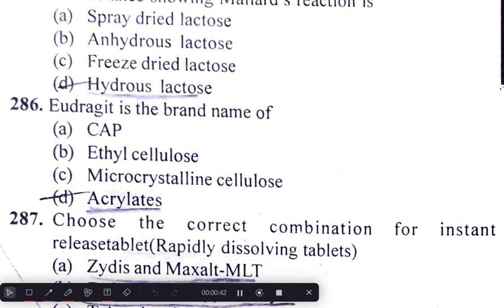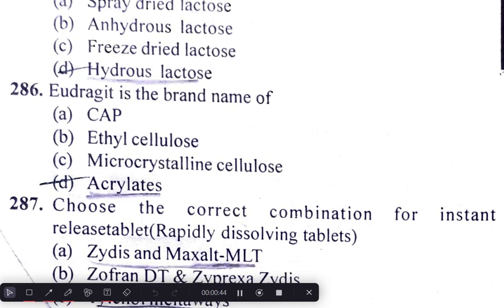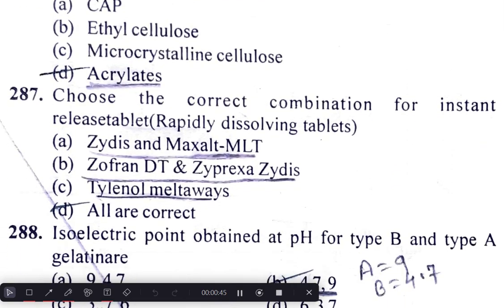Eudragit is the brand name of acrylates. The correct combination for instant-release tablets includes Xydis and Maxalt MLT, Zofran-DT and Zyprexa are Xydis, and Tylenol and Meltavase.